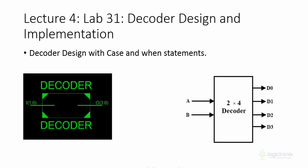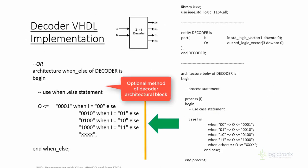Now let's go to Lab 3.1, which is decoder design and implementation. A decoder is a combination circuit which decodes n-bit data into a function. Here 2-bit data A and B is decoded into 4-bit format. We can use a decoder for decoding or identifying information — deciphering means unpacking data into the original format. Here we have an example of a 2-to-4 decoder.